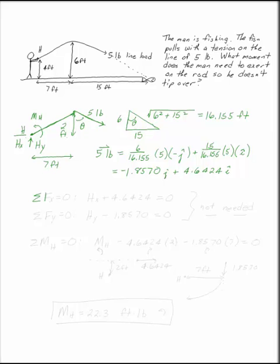We can write our equilibrium equations. The sum of the forces in the x direction is equal to zero. We have Hx and we're going to have four point six four two four i from the five pound load equals zero. The sum of the forces in the y direction gives you HY minus 1.8570 from the five pound load equals zero.